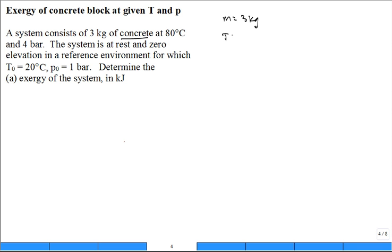The initial temperature is 80 degrees C and the initial pressure is 4 bar. The system is at rest, so the concrete block isn't moving, and it's at zero elevation in the reference environment.